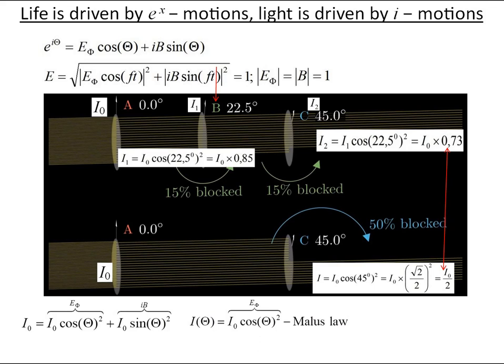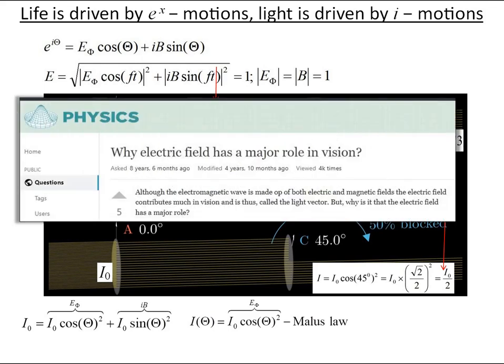Question mark: how does light intensity dimming process happen? Physics trivia: why does electric field have a major role in vision? Electric field has 100 million times more impact on our vision than magnetic field. And polarization is not light absorption or scattering process when light passes through opaque media as expressed by the Beer-Lambert equation.